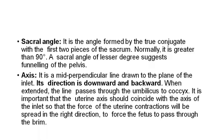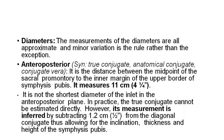Axis of the inlet: It is the mid-perpendicular line drawn to the plane of the inlet. Its direction is downward and backward. When extended, the line passes through the umbilicus to the coccyx. It is important that the uterine axis should coincide with the axis of the inlet so that the force of uterine contraction will be directed in the right direction to force the fetus to pass through the brim.